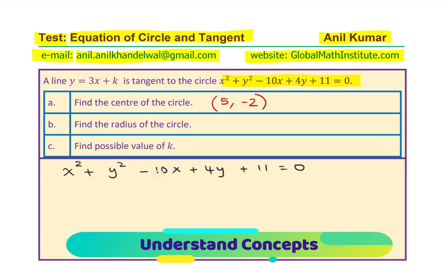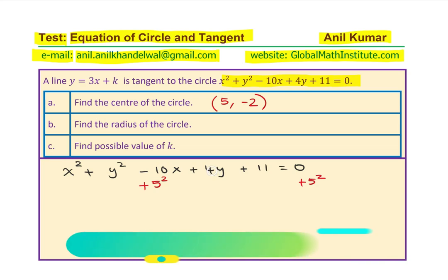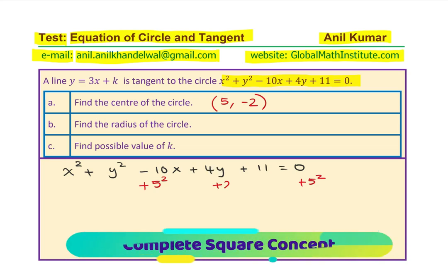Let us see how we do that. The x terms are x² and −10x. Half of 10 is 5, so we add 5² on both sides. For the y values, half of 4 is 2, and therefore we add 2² on both sides. This addition makes the three components perfect squares. So x² − 10x + 5² can be written as (x − 5)², and the y components as (y + 2)².